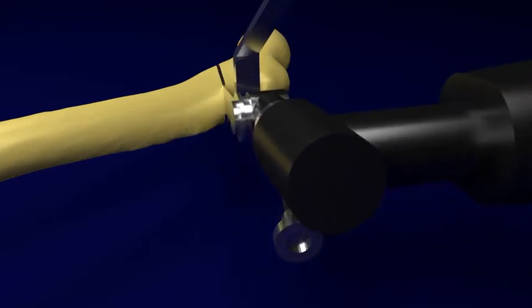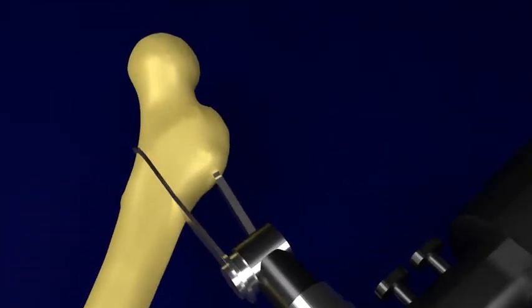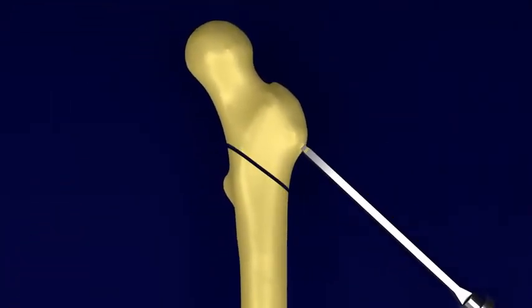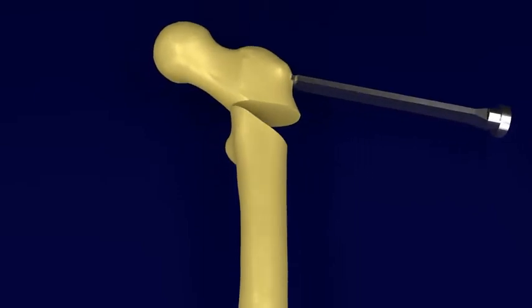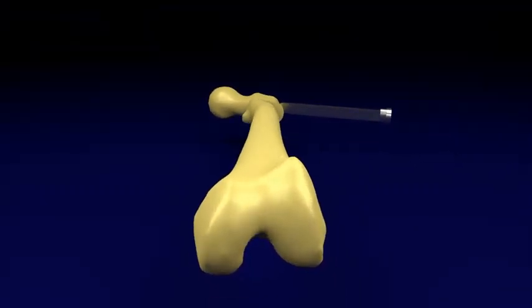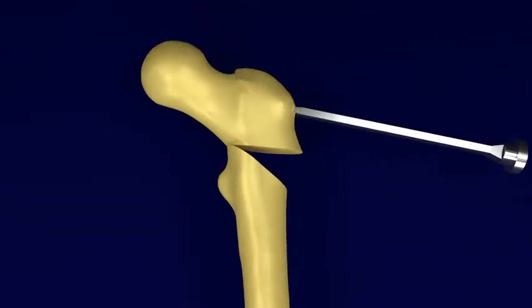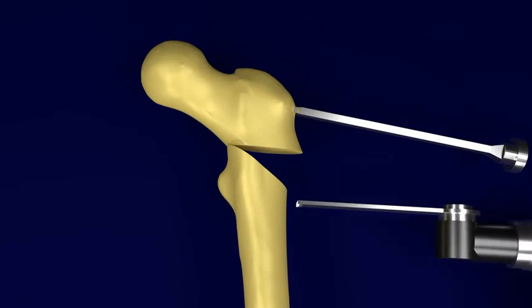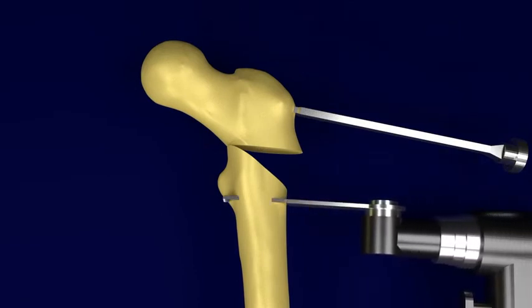Following the first osteotomy, the proximal fragment is abducted and maintained in a position of neutral rotation, and a second osteotomy is made 90 degrees to the distal femoral shaft, and a piece of bone is removed, which is irregular in size, including the proximal femoral metaphysis and lesser trochanter.